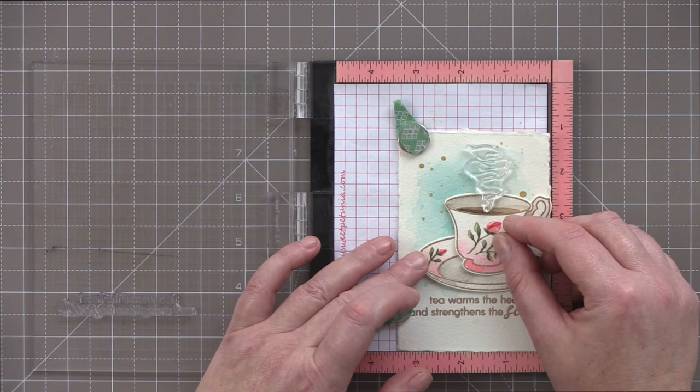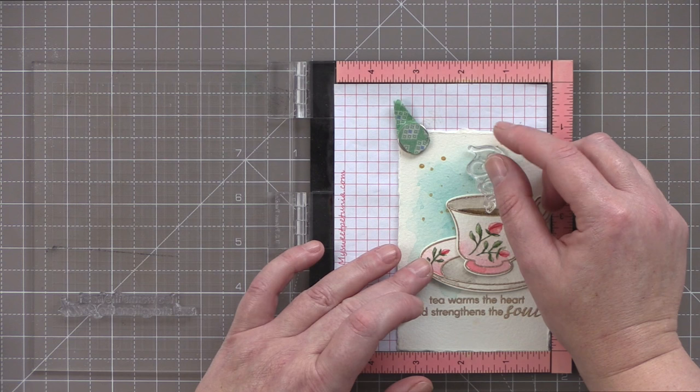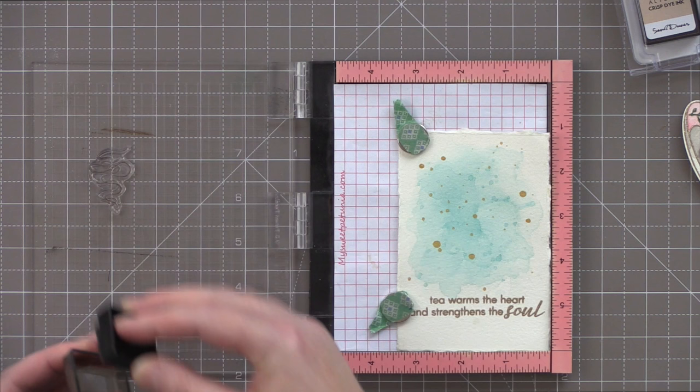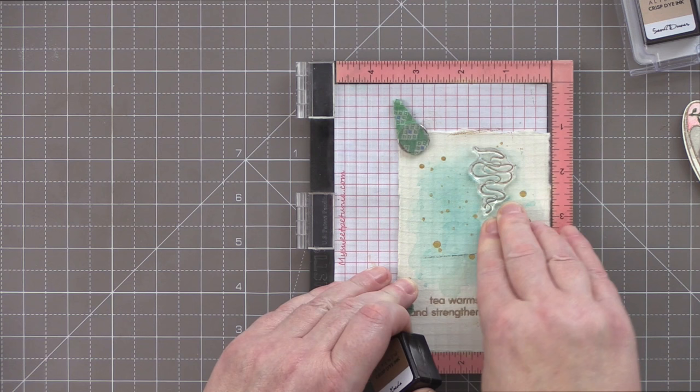I did want to finish this card off by getting the steam rising from the teacup but that means that I'm going to have to stamp the image twice, once on the teacup and once on the background. I'm lining up where I want the steam image to be and where I'm going to place the teacup on the background and once that's all lined up I can close the door of the MISTI and then stamp that on the teacup and the background.